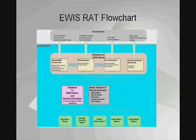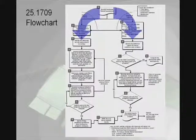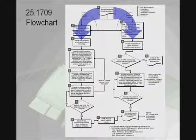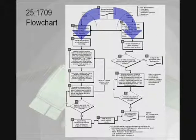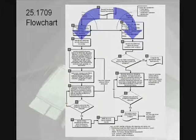In addition to the reports just mentioned, the EWIS RAT has a number of tools which can help engineers analyze EWIS. Seen here is the 25-1709 flowchart, which shows the breakdown of the EWIS analysis. The left side of the chart focuses on the physical effects, while the right side focuses on the system effects of wire failure. The EWIS RAT provides reports and analyses to cover all aspects of this chart.